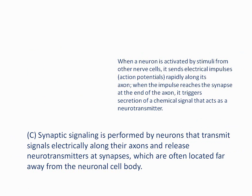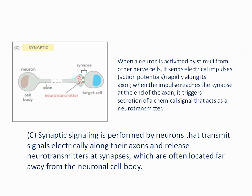The third type is synaptic signaling, performed by neurons that transmit signals along the axon. When impulses reach the end of the axon, they trigger the release of neurotransmitters, which bind to target cell receptors at the synapses — this is why it is called synaptic signaling.